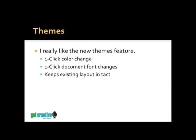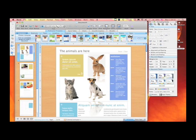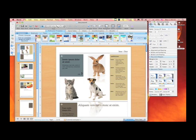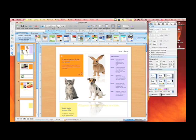Themes. I really like the new Themes feature. You can apply themes to your overall project, and within just one click you can completely change all the colors and fonts used in your project. What's nice is you can preview your documents in all these different new layout arrangements with colors and fonts, and it keeps your existing layout intact. With Document Themes in Office 2008, all you have to do is select a new color theme and it changes the entire look and feel of your document. You have various color palettes to choose from, and you also have the ability to change your fonts with just a single click.